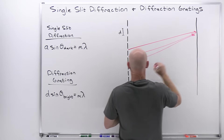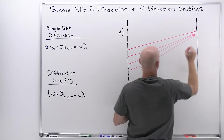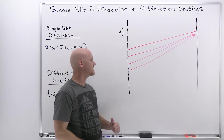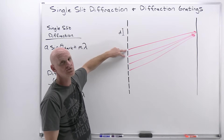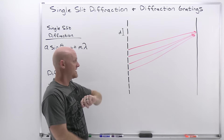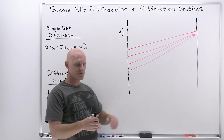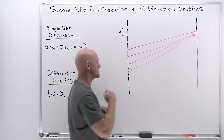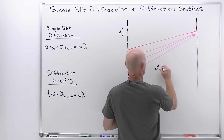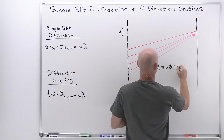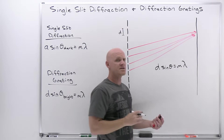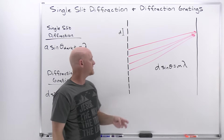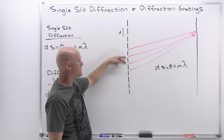Light passes from each slit to a common point on the screen. This gets complicated quickly, but we can reduce the problem significantly by focusing on just two adjacent slits. That brings us back to Young's determination for the two-slit experiment: D sine theta equals m lambda, corresponding to the bright fringes.